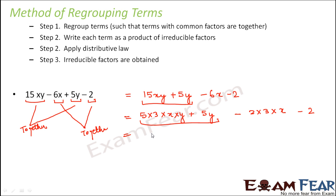So 5y is common. 5y, what is left inside? 3x, because 5y we have already taken outside. So 3x is left and for the second term only 1 is left. So this would be 5y into 3x plus 1.